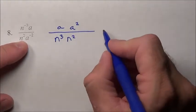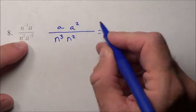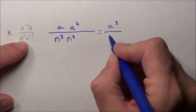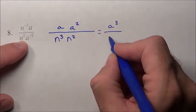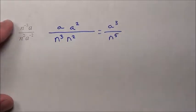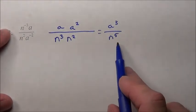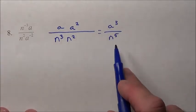Well, nobody's going to cancel. We're simply going to have a, a, a, so that's a cubed. n, n, n, n, n, that's n to the 5th power. That's what we're going to end up with. This fraction simplifies to simply a to the 3rd over n to the 5th.